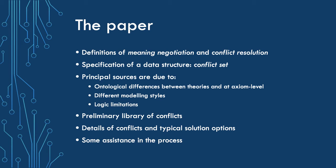The paper itself goes into some detail on the definitions of meaning negotiation and conflict resolution, and specifies a data structure to store all the necessary detail of the conflict. It then describes the core principal sources of conflict, such as ontological issues at the theory and axiom level, and logical differences, which is elaborated on with a preliminary library of conflicts, how to find such issues in ontologies, and how to go about generating options to choose from in order to solve the issue.